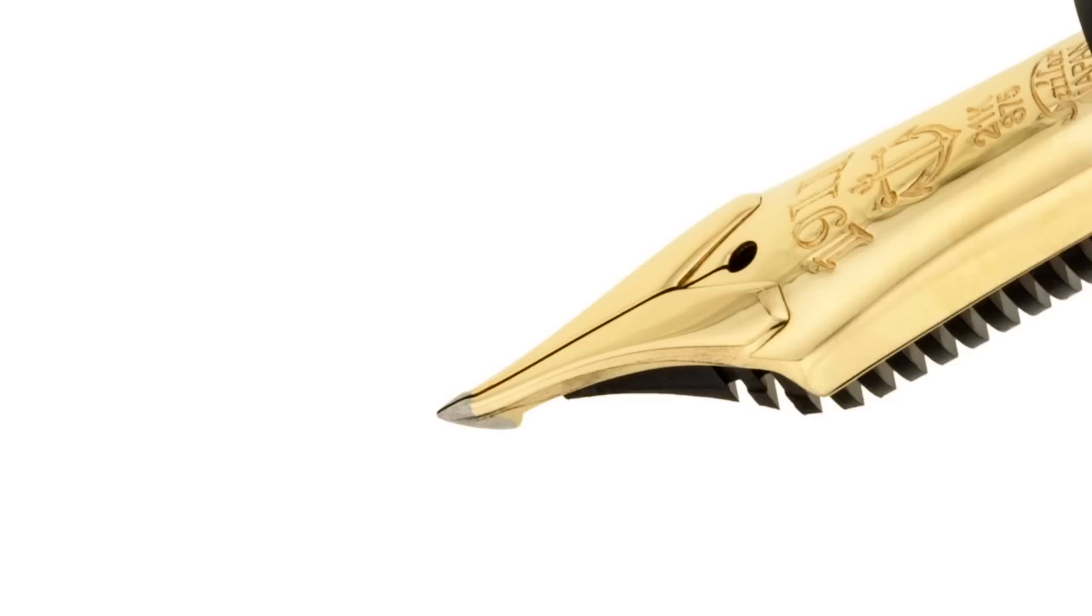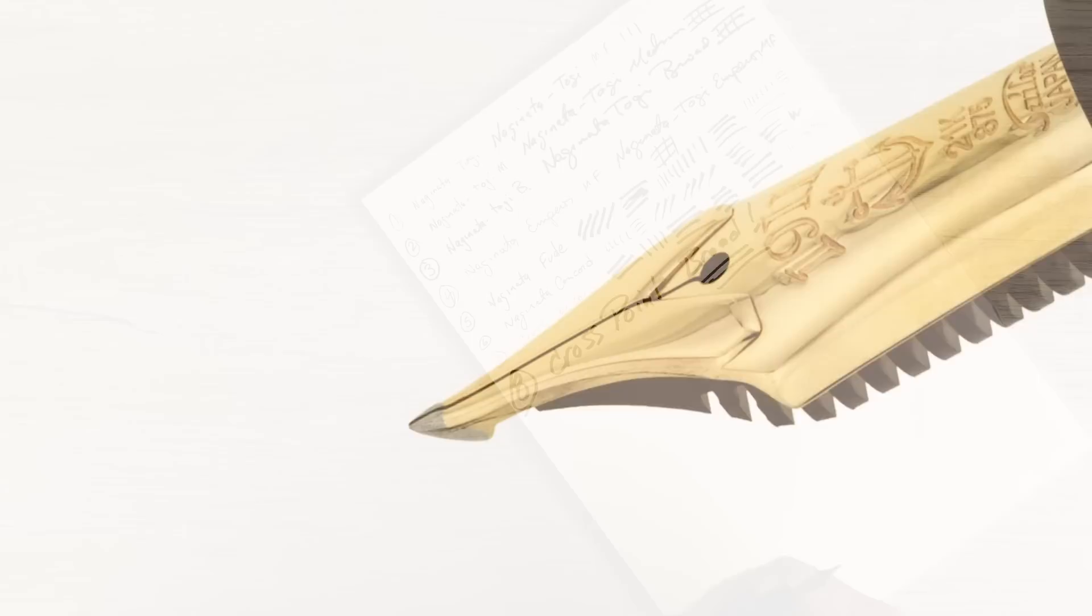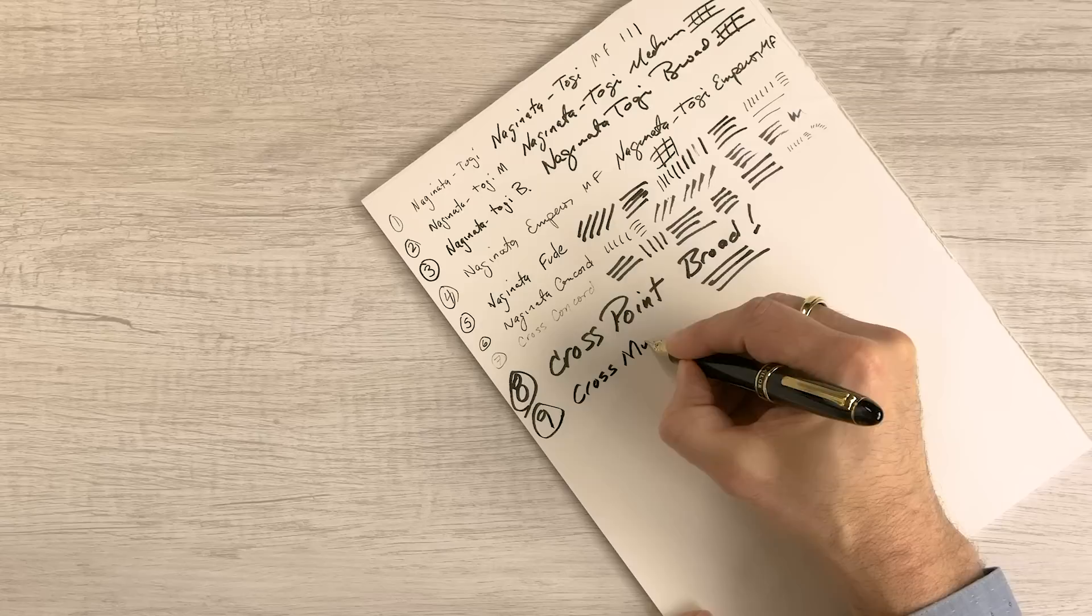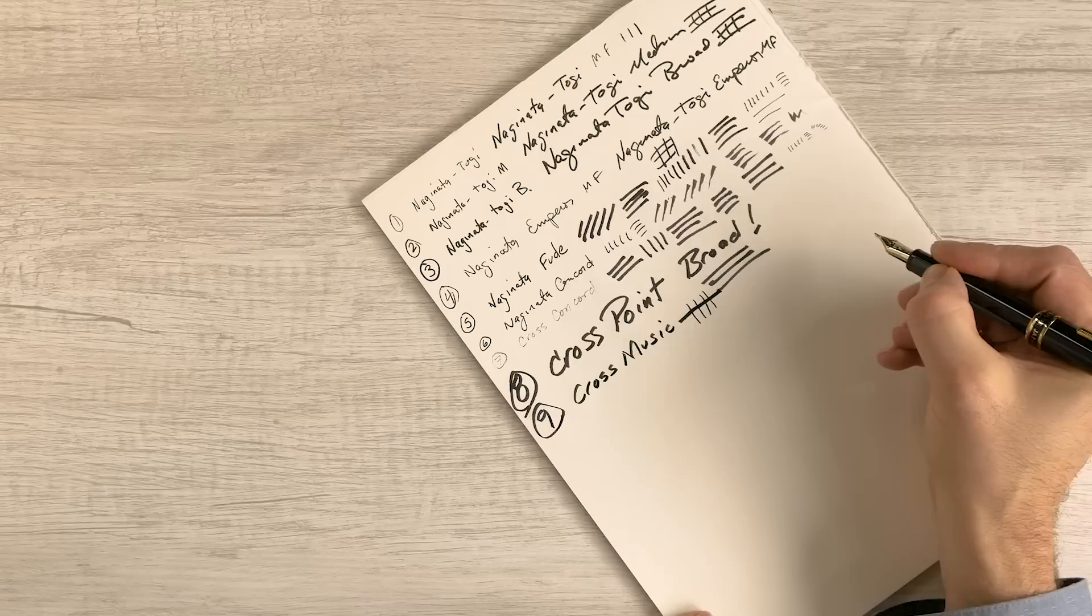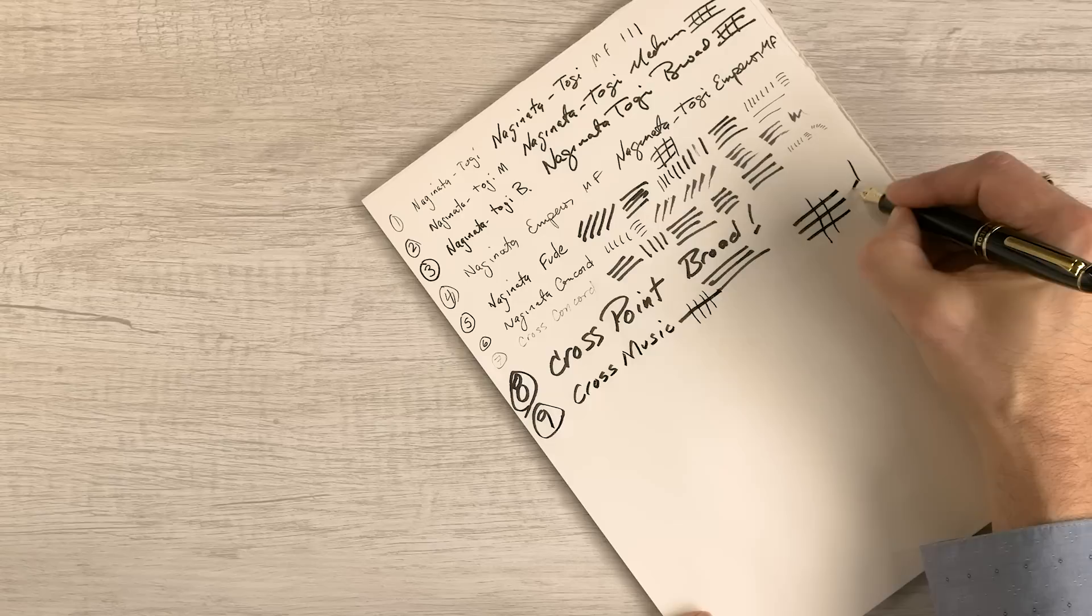However, the grind on the Cross Music is ground in, so your downstrokes are thin, the stem of your note, and your cross strokes are very broad. So essentially, it's a very broad architect nib. And you'll see this. There's your downstroke.